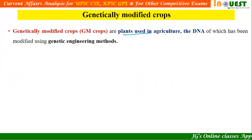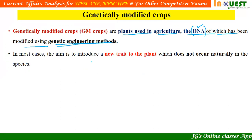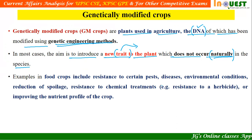Genetically modified crops are plants used in agriculture whose DNA has been modified using genetic engineering methods. In most cases, the aim is to introduce a new trait to the plant which does not occur naturally in the species. A trait is a special character. We are trying to insert a special character which is not there naturally in that particular DNA, and this kind of modification is called genetic modification.